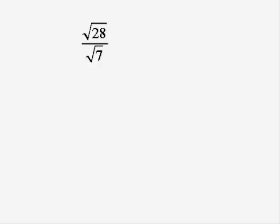Now in this case, root 28 divided by root 7. There's a rule that says we can put them both in the same square root sign. So the square root of 28 divided by 7, which is the square root of 4. And because 4 is a perfect square number, we've just got a simple answer, 2.